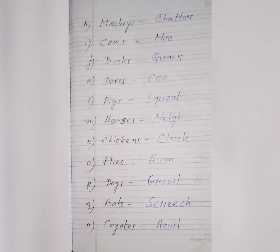H: Monkey sound is chatter, C-H-A-T-T-E-R. I: Cow sound is moo, M-O-O. J: Duck sound is quack, Q-U-A-C-K.